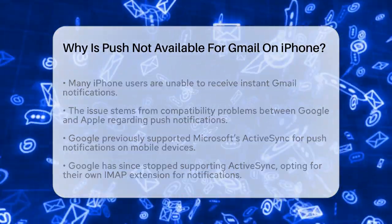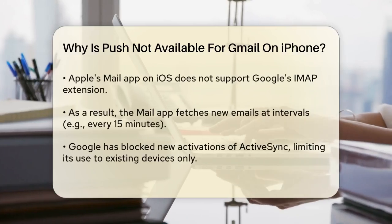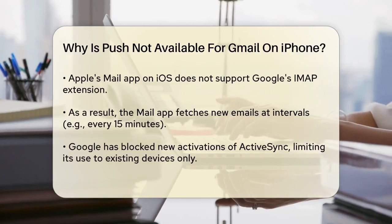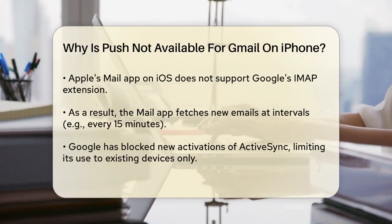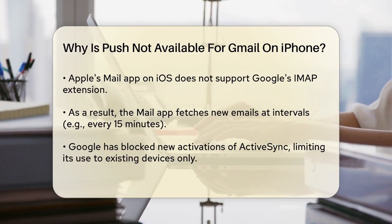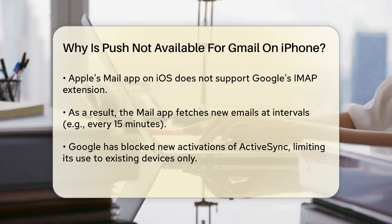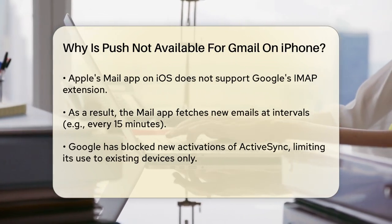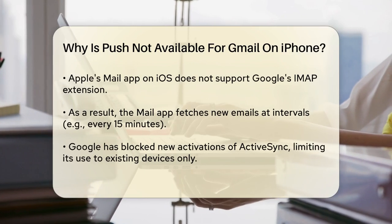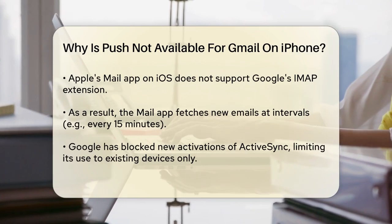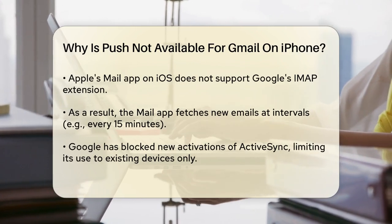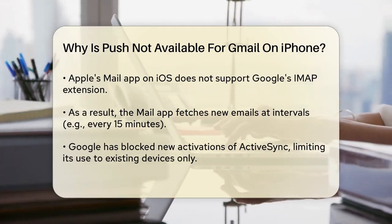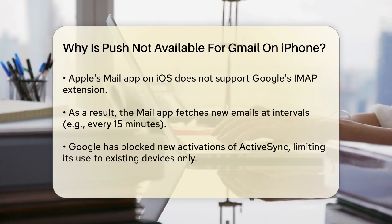The problem is that Apple's Mail app on iOS doesn't support Google's IMAP extension for push notifications. This means that if you're using the built-in Mail app on your iPhone, you won't get push notifications for your Gmail account. Instead, the Mail app will only fetch new emails at intervals, such as every 15 minutes.